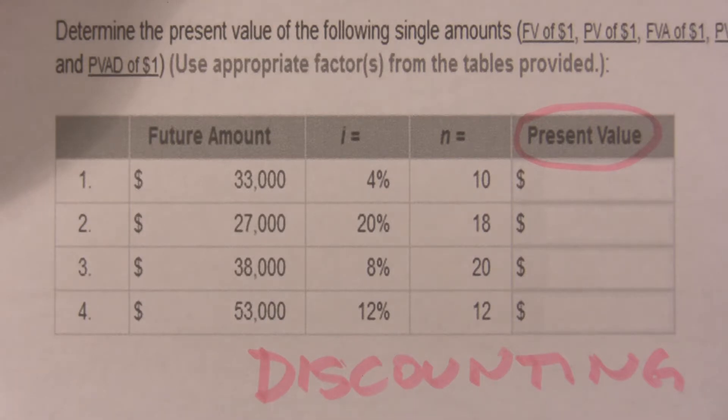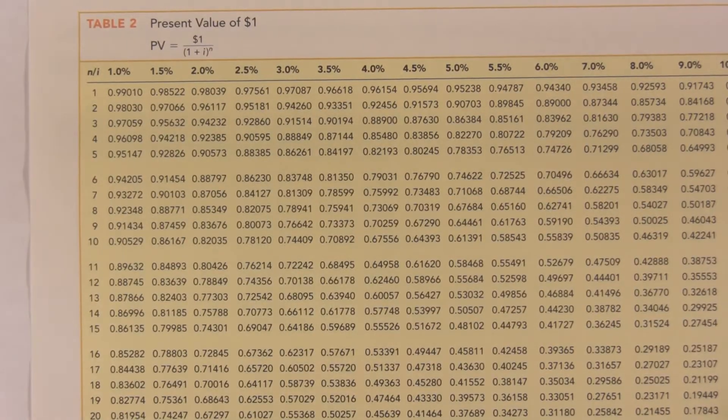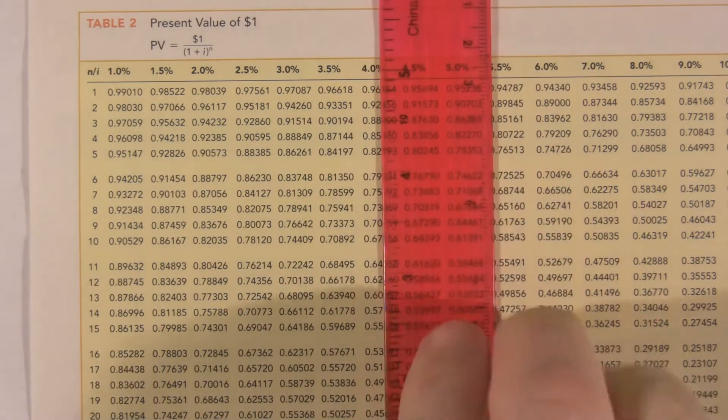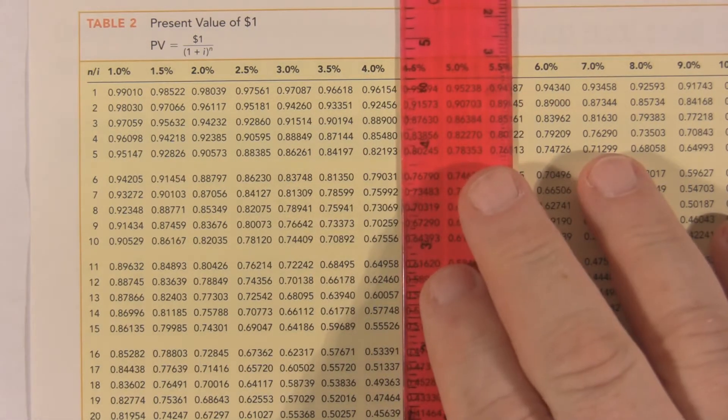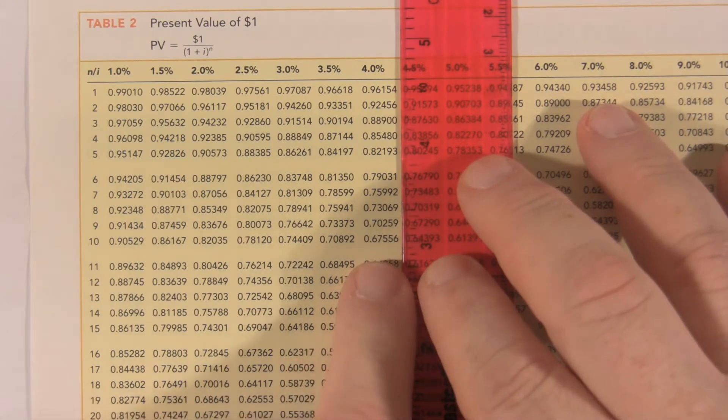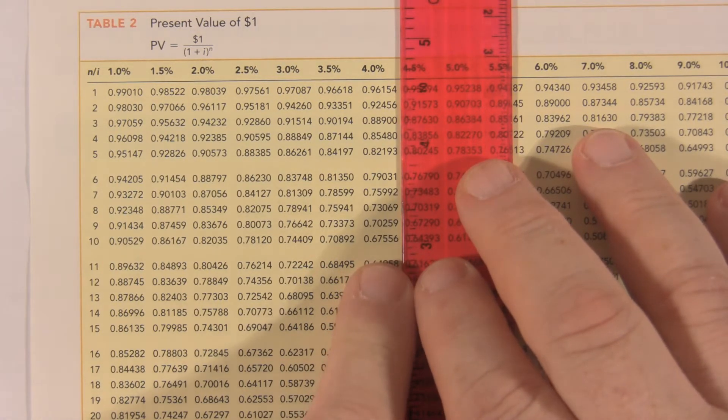Now, we could do exactly like we did before. We could go to the present value chart and our first one tells us that our interest rate is 4%. That's that column. And it tells us that our compounding periods are 10. So we come up with that number right there, a little tiny, you may not be able to see it. It's 0.67556.